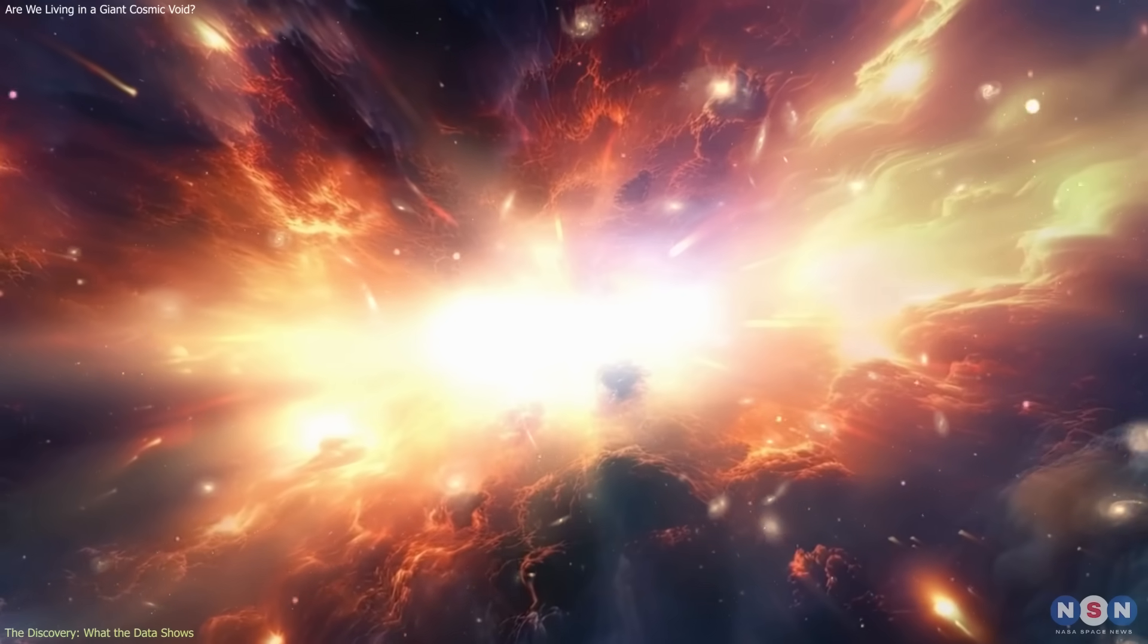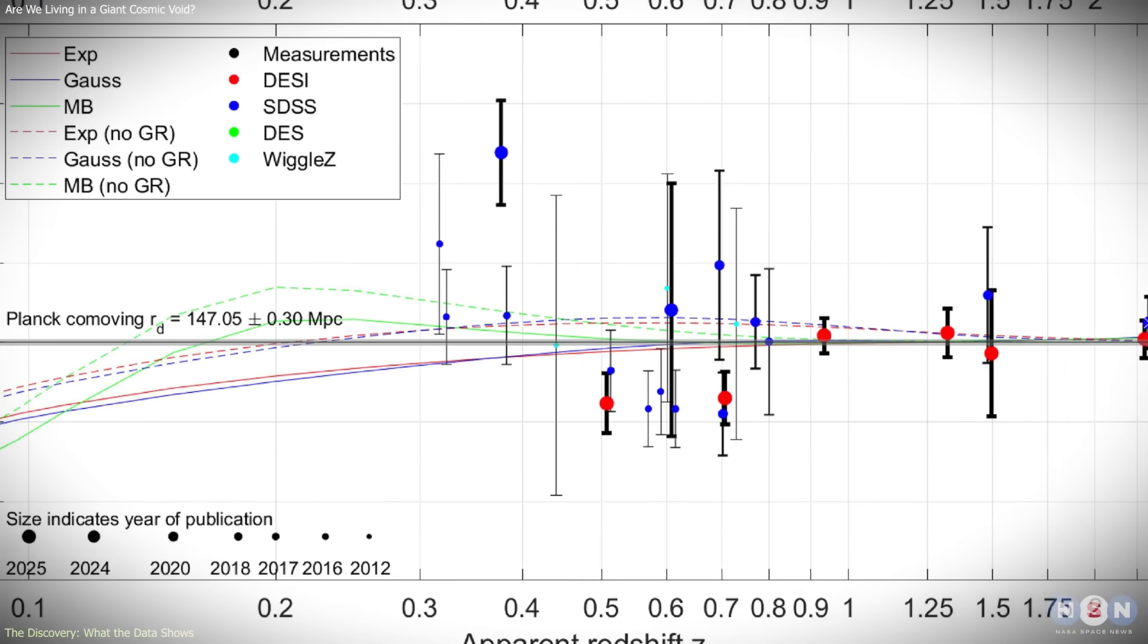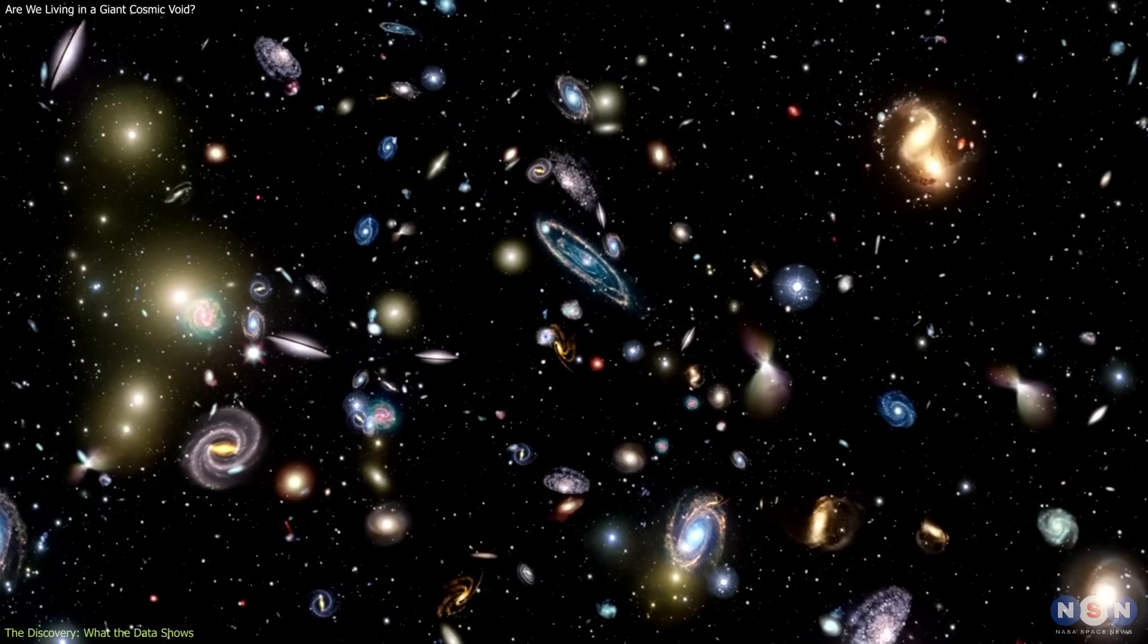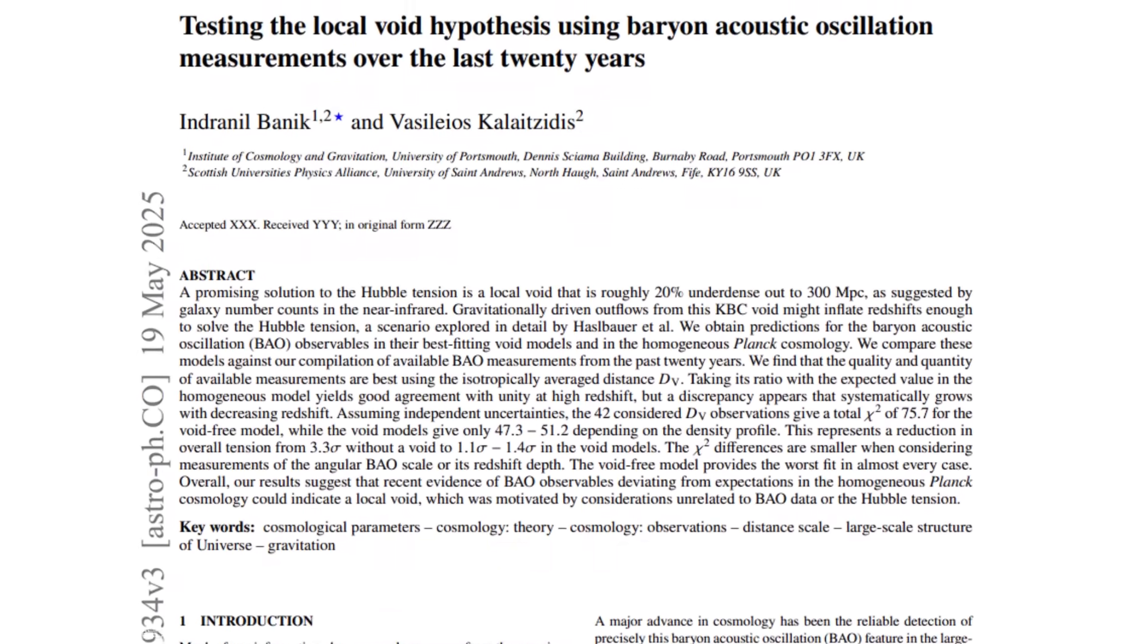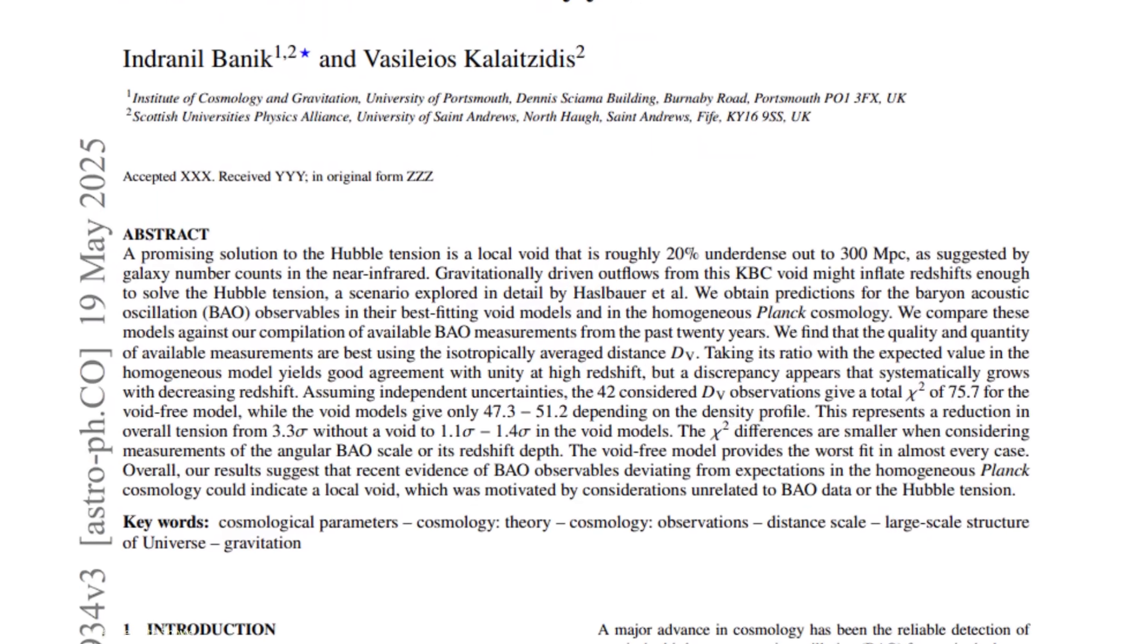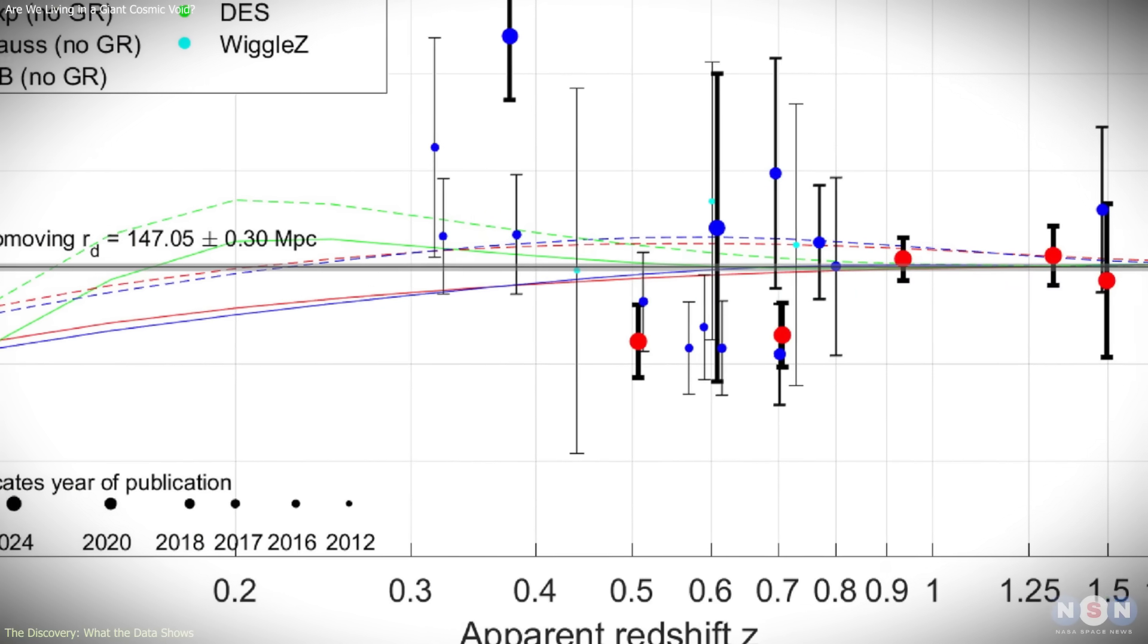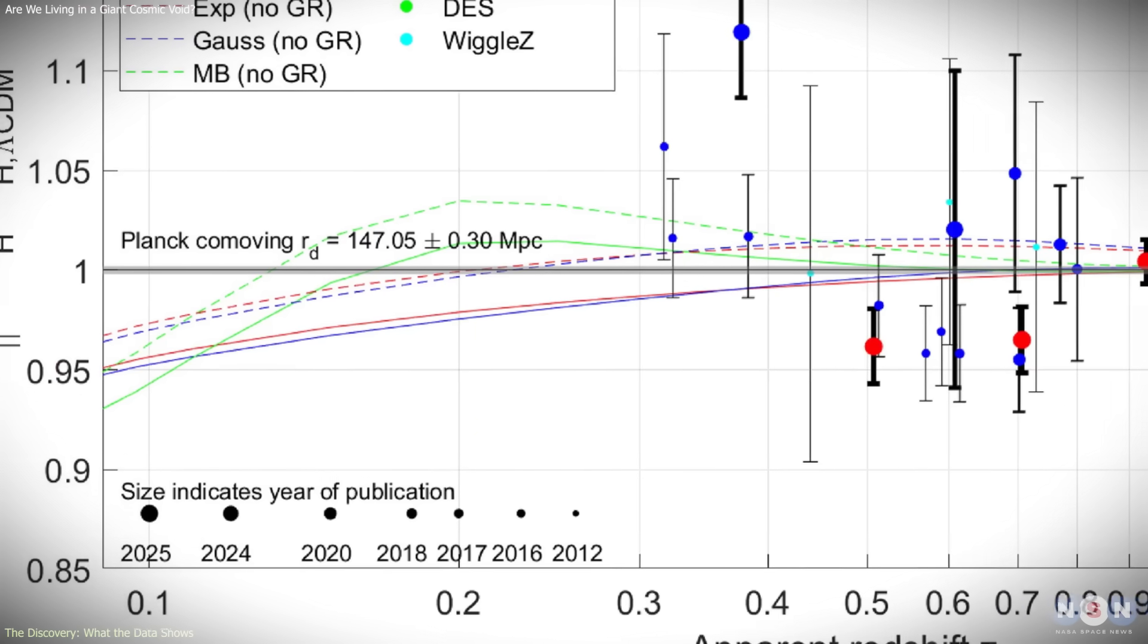Rather than focusing on the earliest universe, the analysis emphasized relatively low redshifts, distances closer to our own cosmic neighborhood. What emerged was a consistent and structured deviation from standard expectations. The BAO ruler appears slightly larger on the sky than predicted, and this excess becomes more pronounced at closer distances.